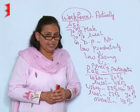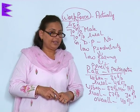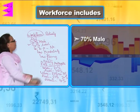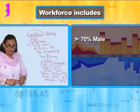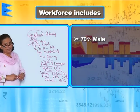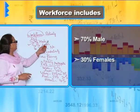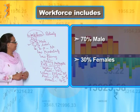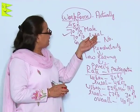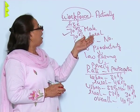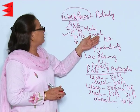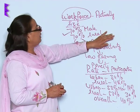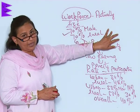Now we will talk of the size of the workforce in the country. It is 70% of the males who constitute the workforce of the country and 30% of the females who are employed. Whereas 70% of the workforce is in the rural areas and only 30% in the urban areas.